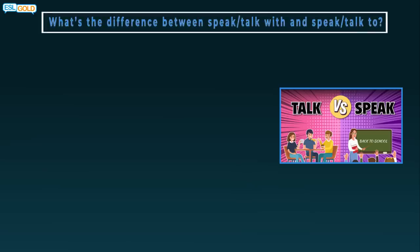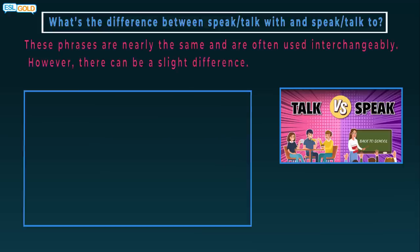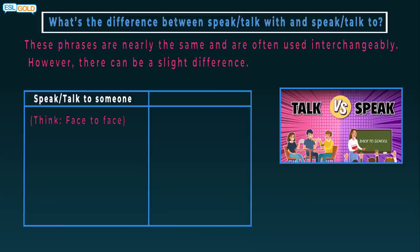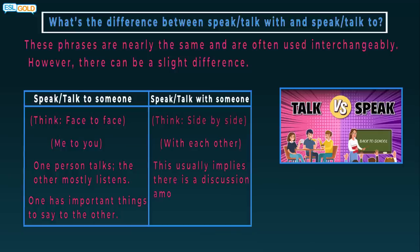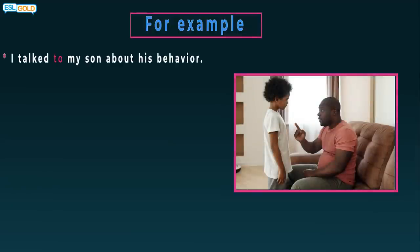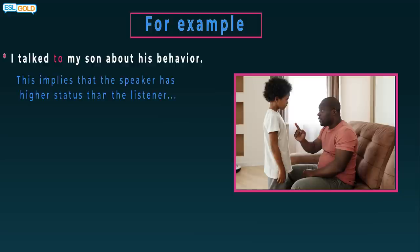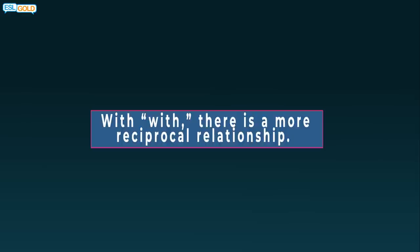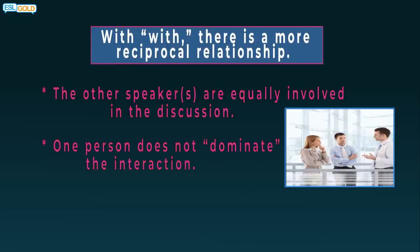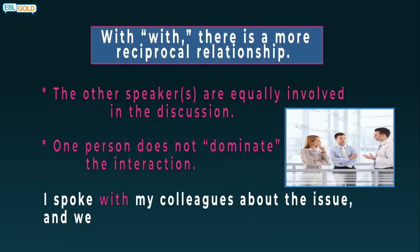What's the difference between speak or talk with and speak or talk to? These phrases are nearly the same and are often used interchangeably. However, there can be a slight difference. Speak or talk to someone: think face to face, me to you. One person talks, the other mostly listens. One has important things to say to the other. Speak or talk with someone: think side by side with each other. This usually implies there is a discussion among equals. For example, I talk to my son about his behavior. This implies that the speaker has higher status than the listener, but not always. For example, she spoke to her boss about the incident. This implies that the boss is the main listener. She is the main speaker and has something important to say. With with, there is a more reciprocal relationship. The other speakers are equally involved in the discussion. One person does not dominate the interaction. I spoke with my colleagues about the issue, and we all came to an agreement.